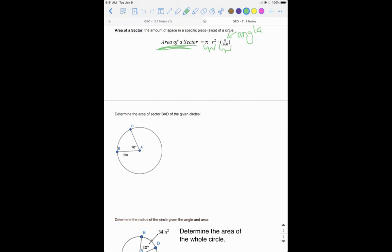So let's look at this first one. We want to find the area of the sector BAD. We want that section. Normally the section that the angle is given is the one that you're trying to find, so we're given 70 degrees in this case.